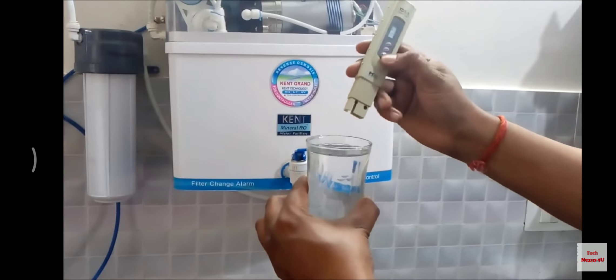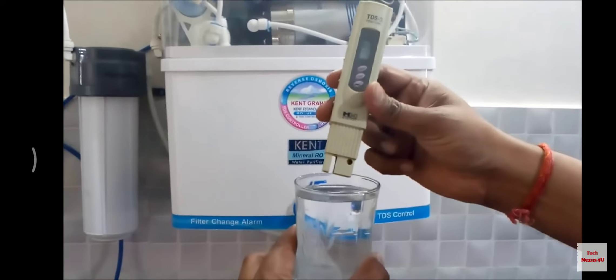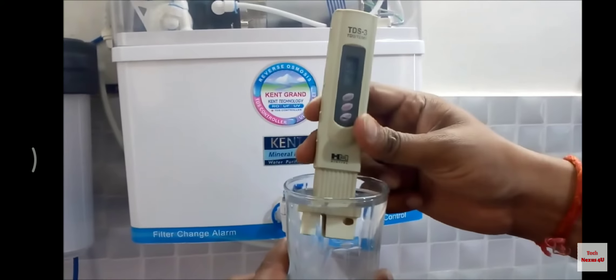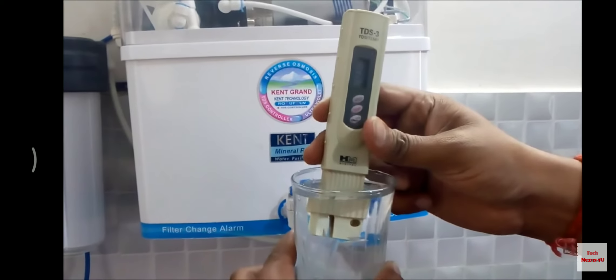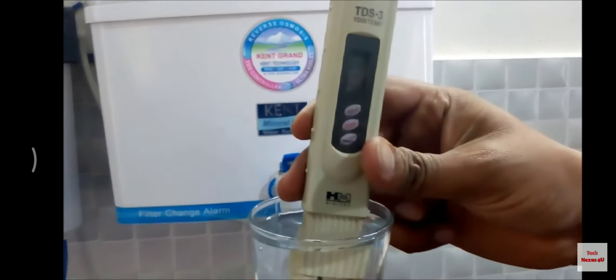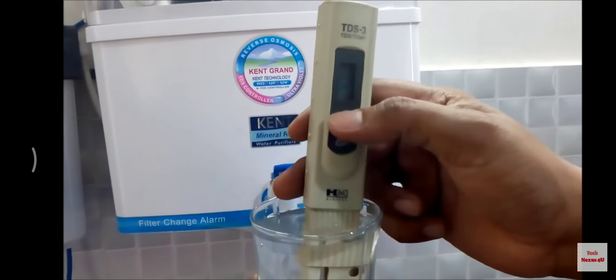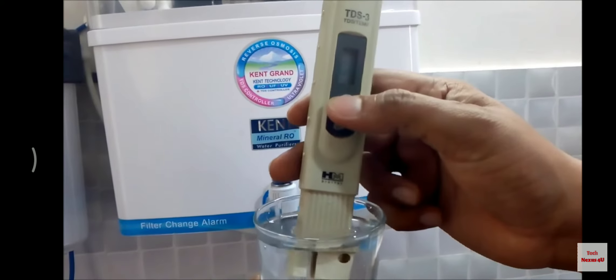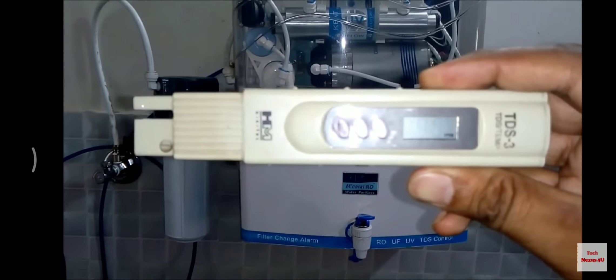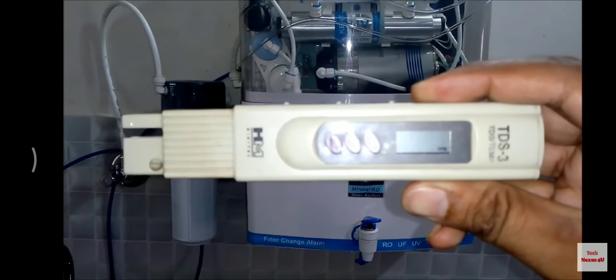First of all, dip it in halfway. You can measure this reading at 48 ppm. You can hold here, you can see here. Our TDS is at 48 ppm.